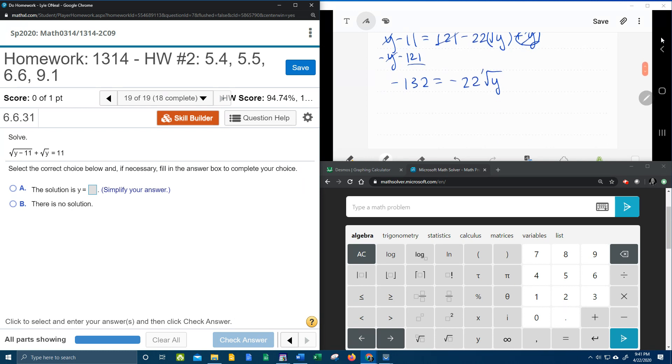And remember we're trying to isolate this square root, this radical, so now I need to divide both sides by negative 22. So what is negative 132 divided by 22? That's going to be a positive 6. Negative over a negative makes a positive 6. And we now have the square root isolated, so now we can square both sides again to get rid of the square root. And we can see that y is going to be 36.